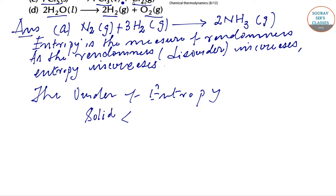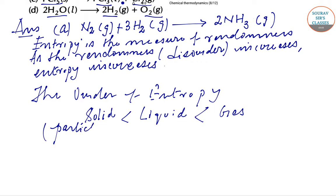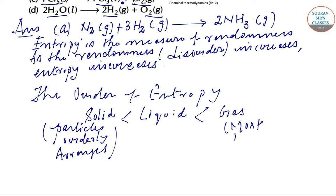The order of entropy goes from solid, then liquid, to gas. Randomness is largest in gas particles. Solid particles are orderly arranged, and gases are the most disordered. So the degree of randomness, that is entropy, is highest in gases.